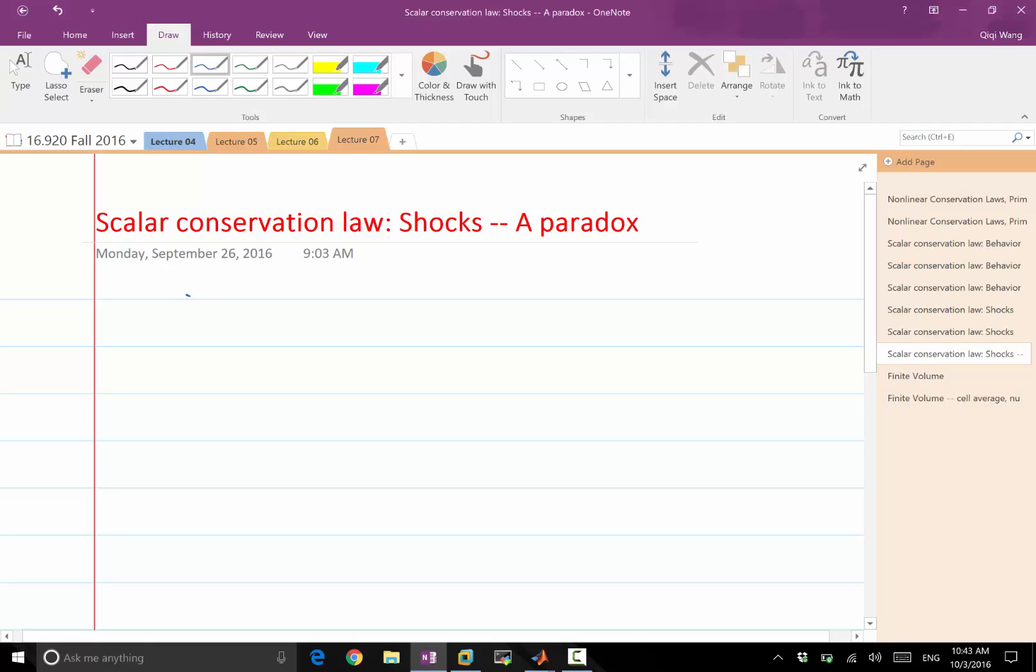So we compute the speed of the shockwave to be FL minus FU, where FL is F of UL and FU is F of UR, divided by UL minus UR. So instead of dF/dU, this is delta F over delta U.